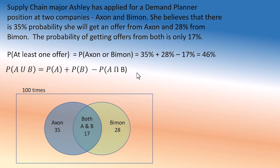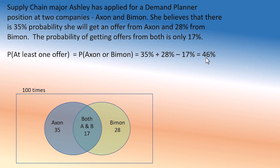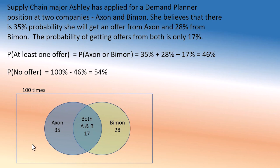The next question is: what are the chances she gets no offer? That's very simple — no offer means 100 minus 46, which is 54%. The blank area you see here is 54%, and this area is 46%. Together they cover everything, and we are finished.